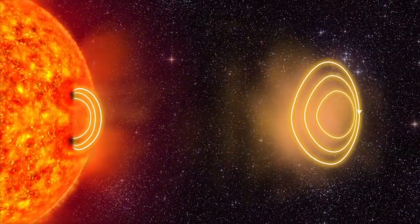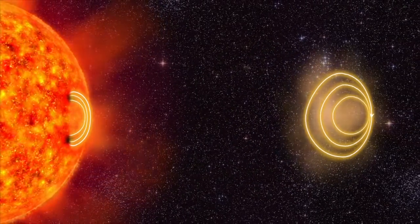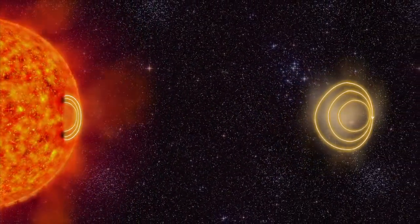Several billion tons of plasma is hurled out from the sun. This is called a solar storm.